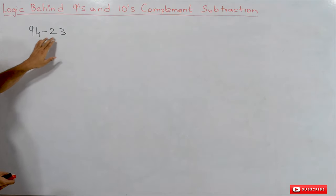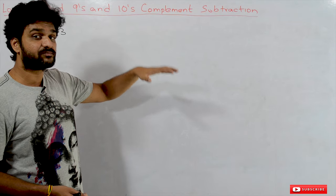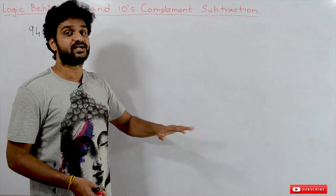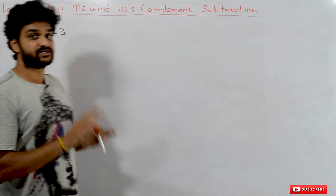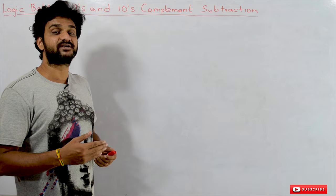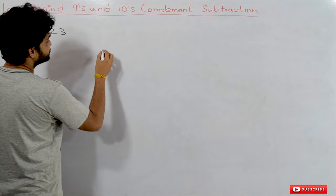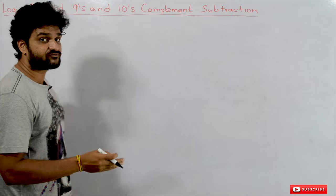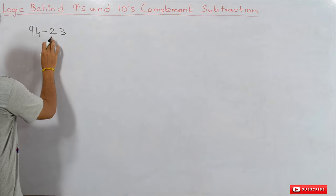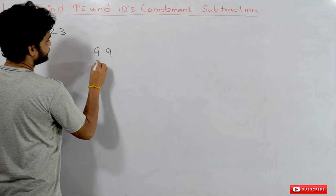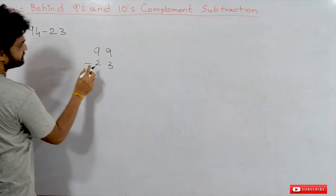If you subtract 94 minus 23 using the 10s complement, we will try to understand how the steps involved get the result. Coming to the steps of 10s complement subtraction: the first step is to find the 10s complement of the subtrahend, which is 23. To find the 10s complement we first find the 9s complement, then add 1. The 9s complement of 23 is 99 minus 23.